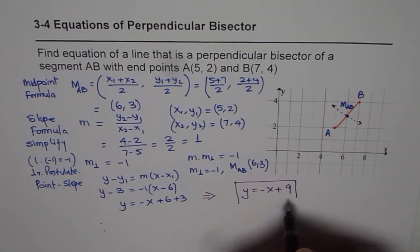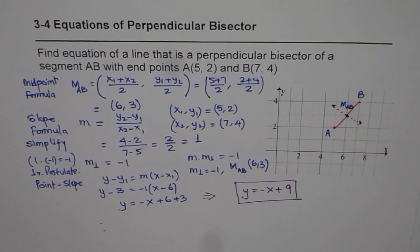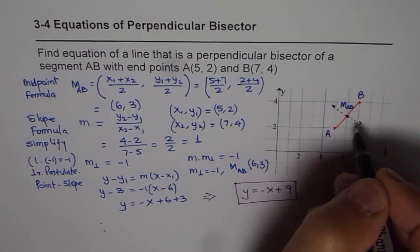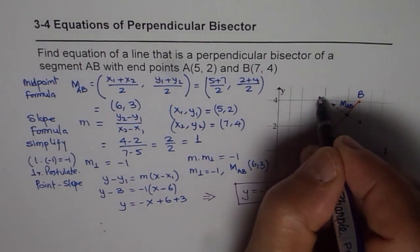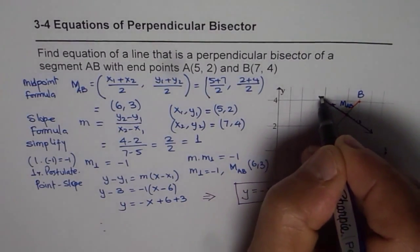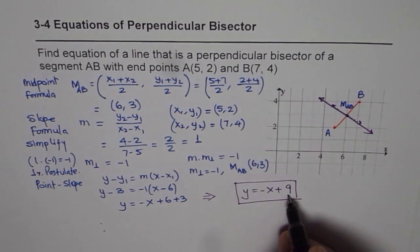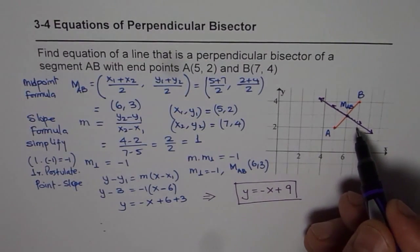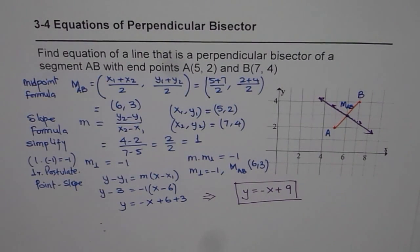That is the equation of the perpendicular bisector of the given line segment. We can draw this line here. It has a y-intercept at 9 and slope of -1. I hope that helps to understand all the steps.